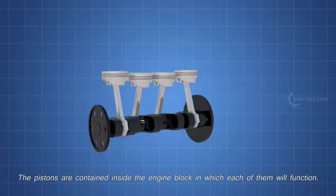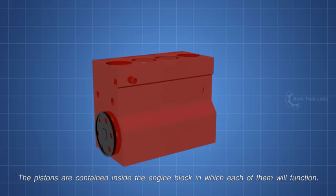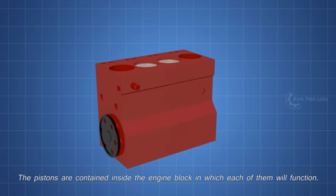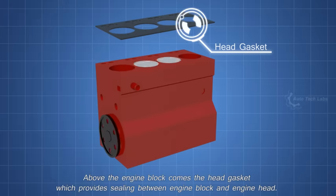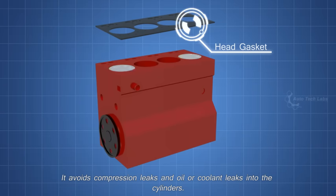The pistons are contained inside the engine block, in which each of them will function. Above the engine block comes the head gasket which provides sealing between engine block and engine head. It avoids compression leaks and oil or coolant leaks into the cylinders.